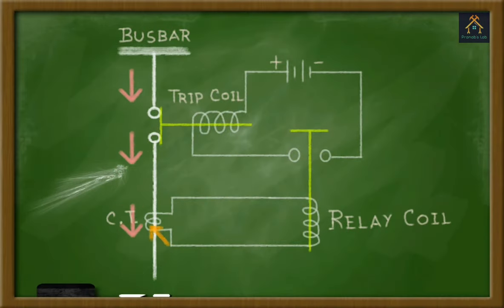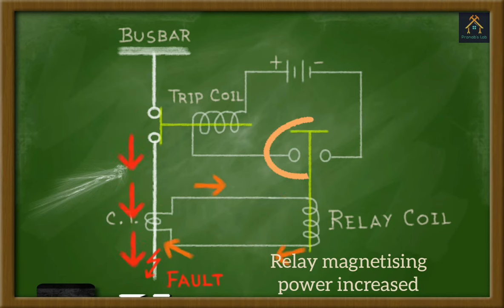Now, let's assume a fault is occurred in the line. As a result, a huge amount of current will be flowed from the bus bar to the line. And according to the CT ratio, it will also carry a large amount of current from the CT to the relay coil. With the increase of the CT current, the magnetizing power of the relay is also increased and it attracts the plunger.